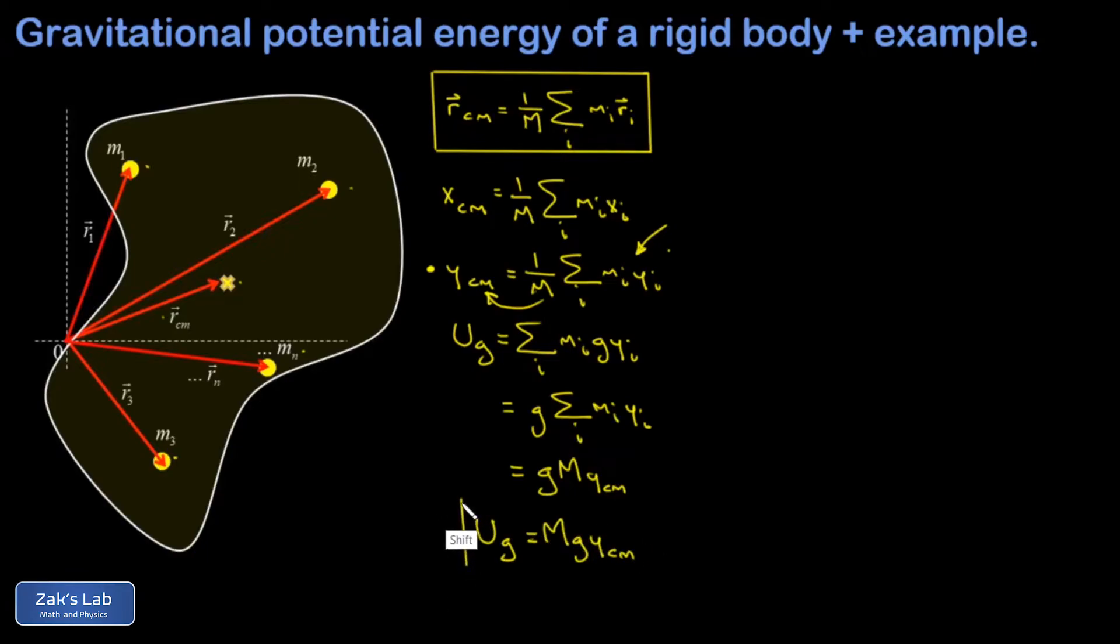So it's important to see the physical interpretation here. We're taking the total mass of the object multiplying by g and then multiplying by the y center of mass coordinate. So what we're doing is pretending the entire object has its mass concentrated at the center of mass and then we're finding the gravitational potential energy of that point mass.